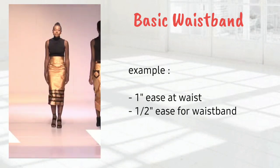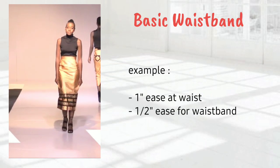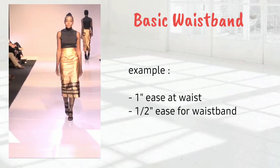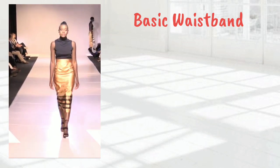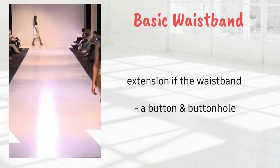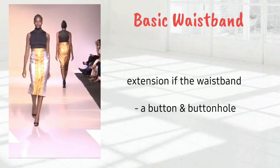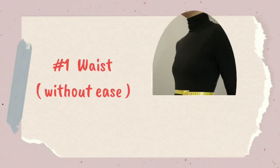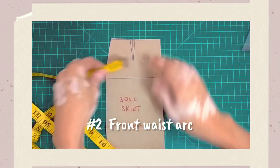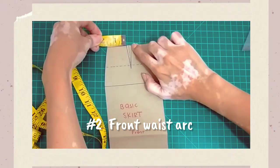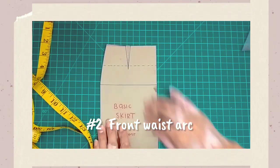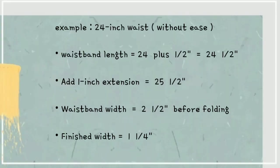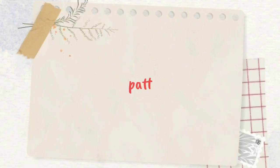The waistline of the skirt has ease allowance greater than the waistband ease, which helps to eliminate possible abdominal stress and rolling of the skirt just below the band. The extension of the waistband is for a button and buttonhole; it can be planted, pointed, or curved and can extend more or less than one inch. The measurements you need are: number one, waist; and number two, the front waist arc. For example, let's say you have a 24-inch waist — take note of the extension and the ease that you have to add.